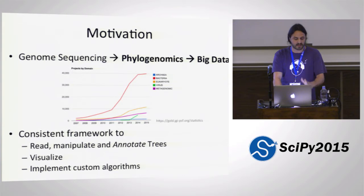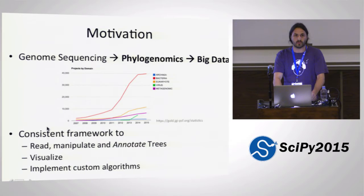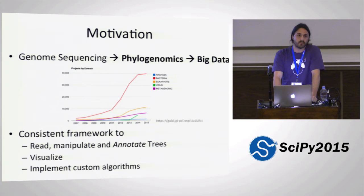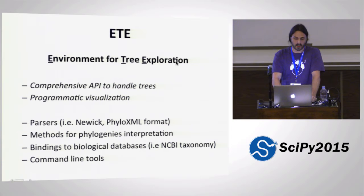Unfortunately, there was no phylogenetic programming infrastructure for analyzing trees at the moment I started to work with this. So I decided to start creating a consistent framework to analyze tree structures. Basically, what we want is to read, manipulate, and annotate those trees with the features we want to analyze. Most importantly, to visualize them in a way that doesn't require a million mouse clicks to set up the image as you want. And also, this is the base for later implementing other algorithms that are really extracting the information from the trees.